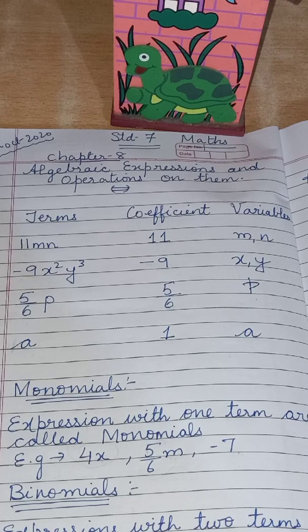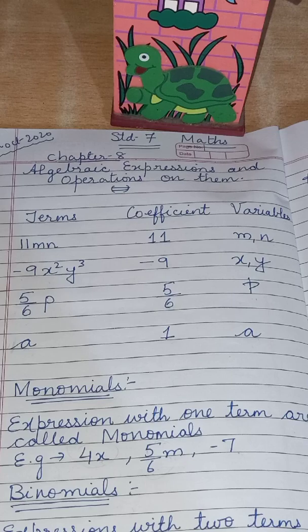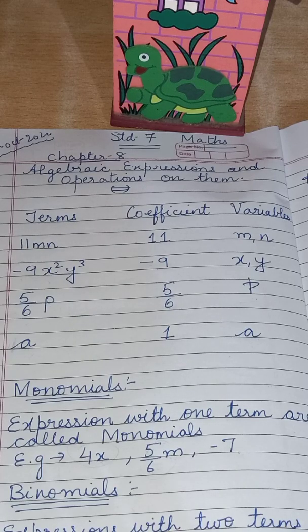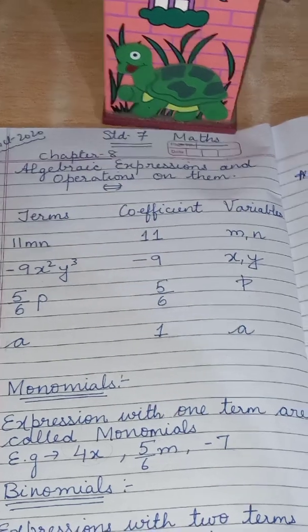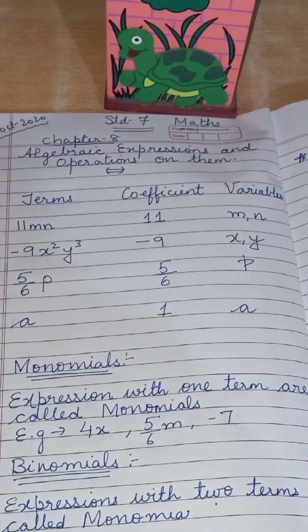Next: 5/6 p. The coefficient is the number 5/6 — it is a number with the sign — and the variable is p. Next term is just 'a'. Here the variable is only there, so the coefficient is always 1. Similarly b, c, d, m — if a term comes like that, 1 is the coefficient and the variable is a.